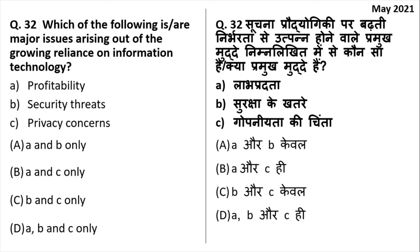Which of the following is a major issue arising from growing reliance on information technology? Security threats are increasing — there are cyber attacks and hackers who can access your bank account. Privacy concerns are also there — people can misuse photos shared on social media. Profitability issues, however, are not related to IT. So the major issues are only B and C — security threats and privacy concerns.